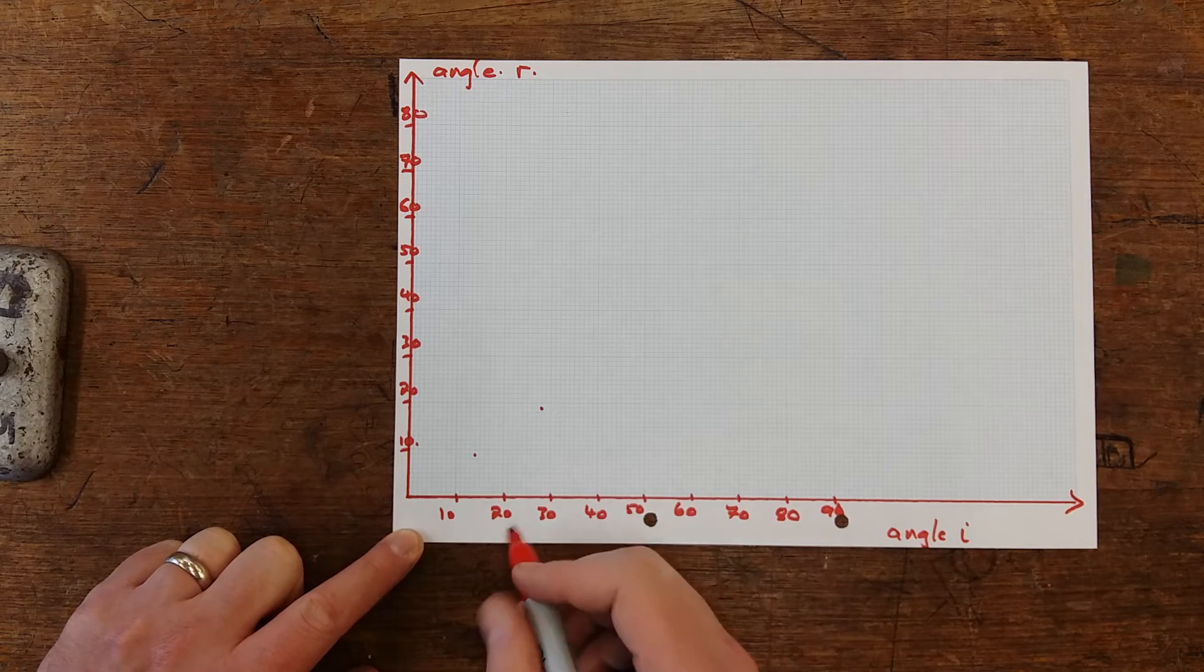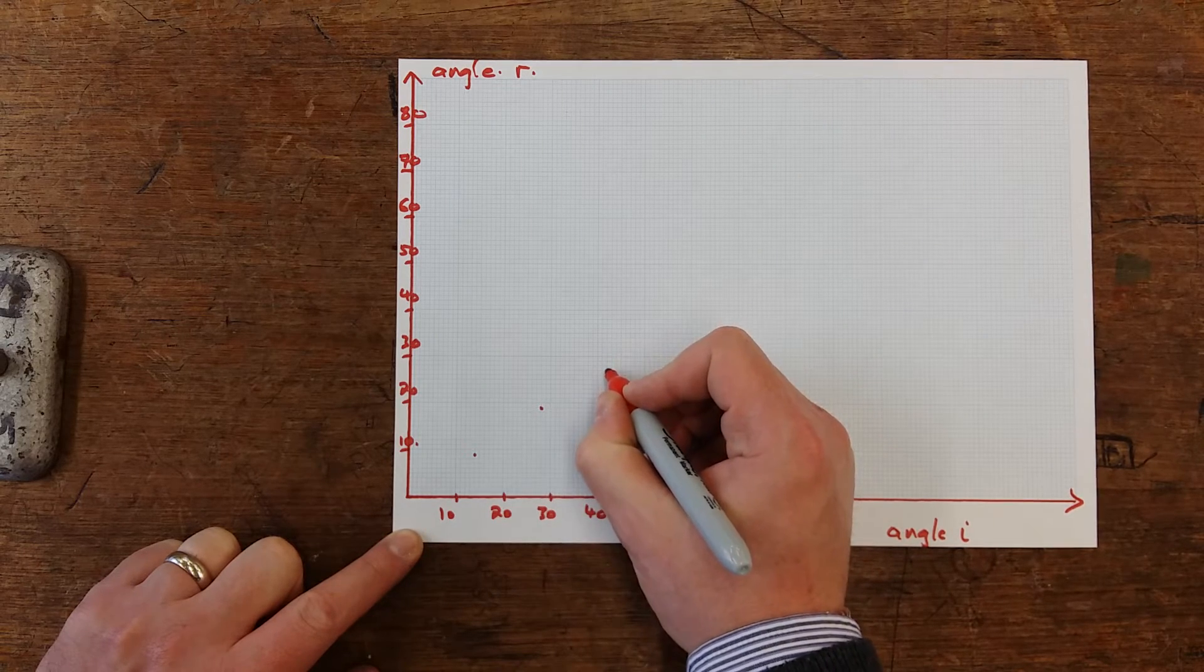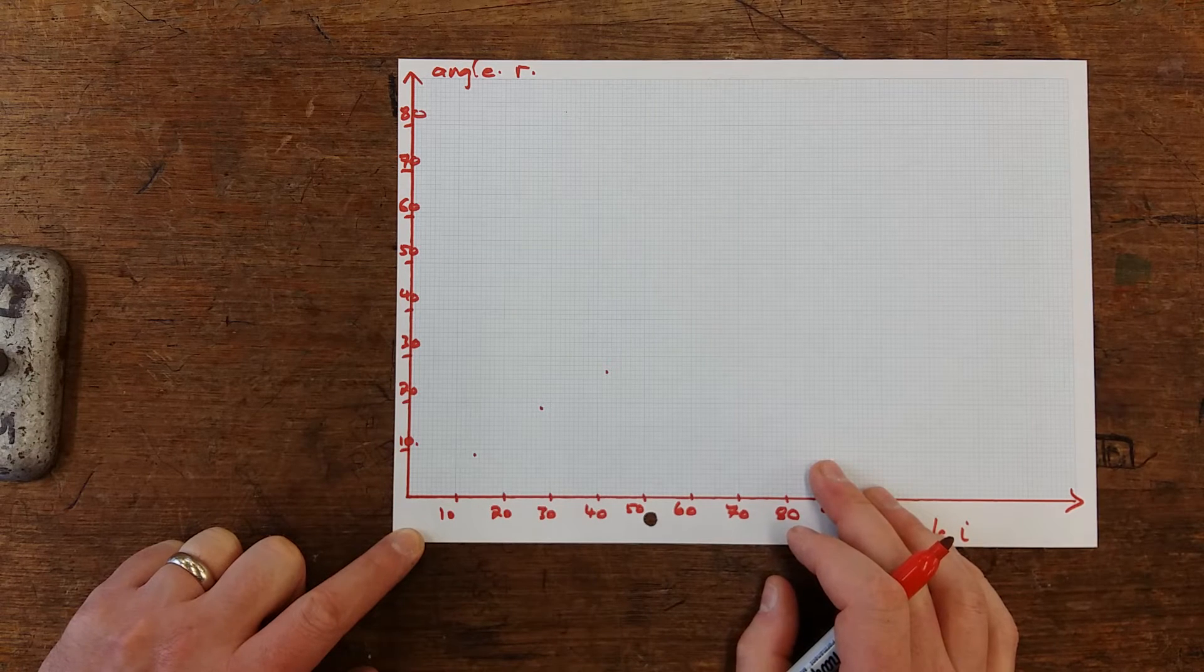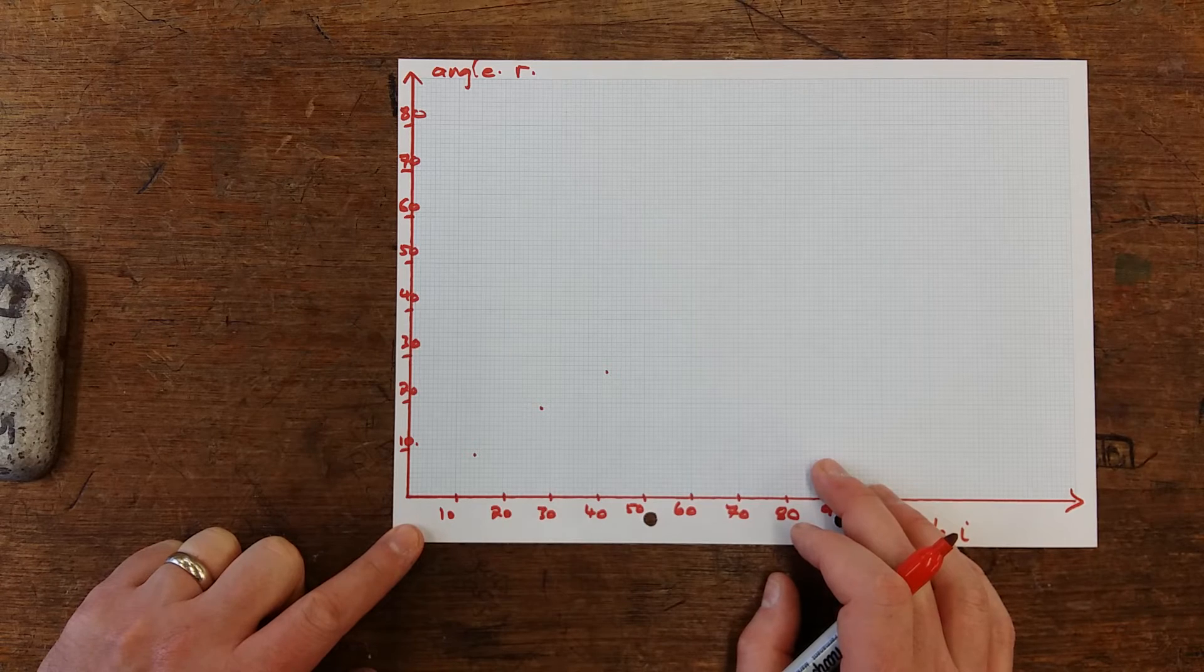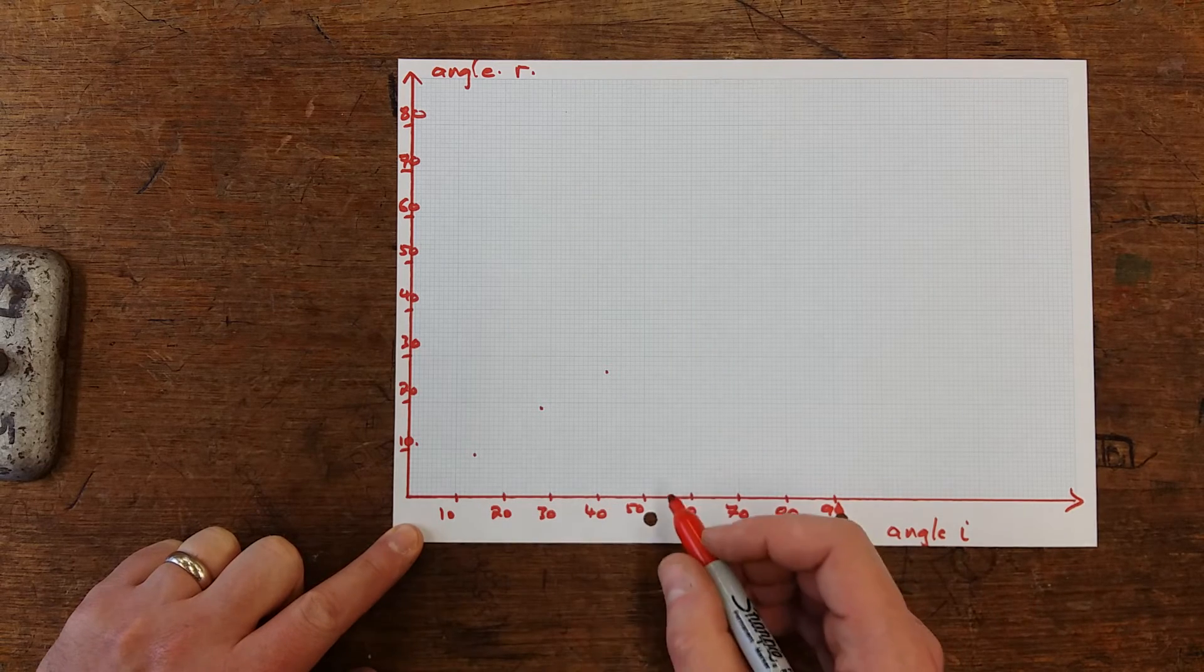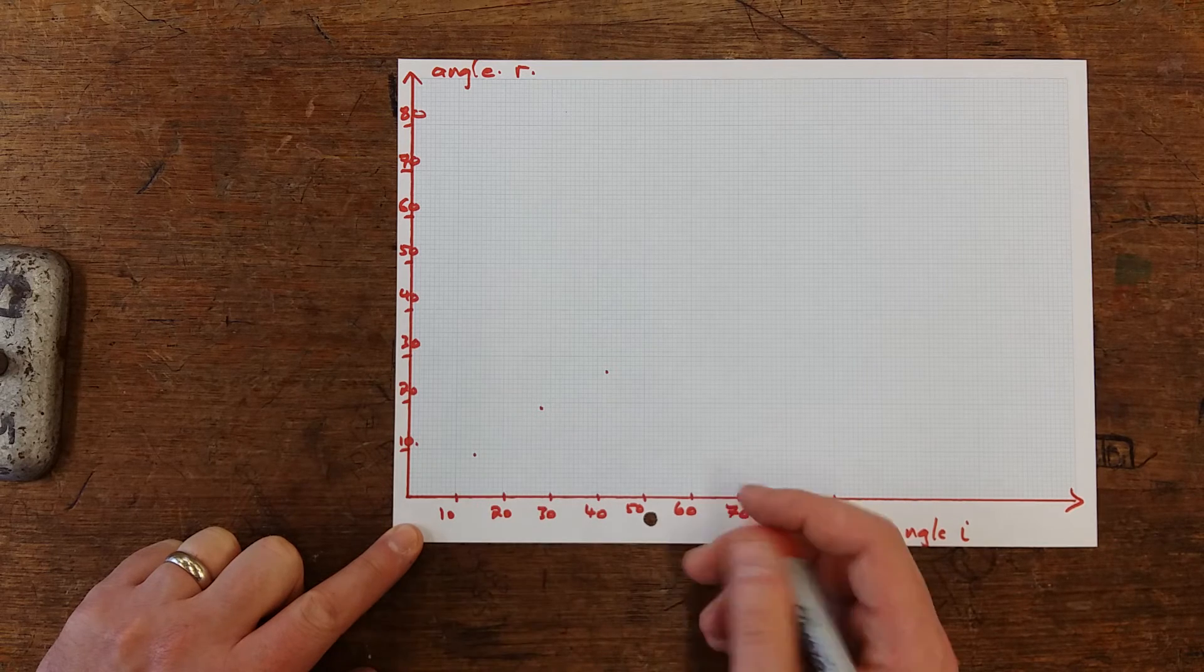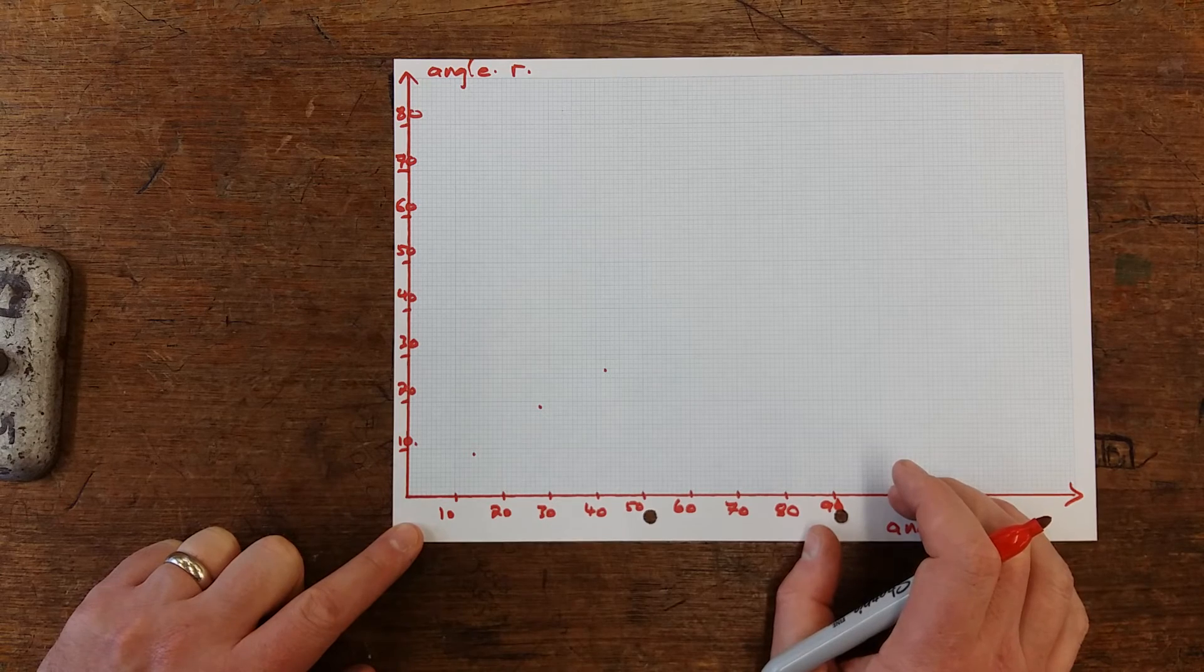So I'm just going to fill these in as I stand here and hopefully we'll find a nice pattern. Now remember when you're doing your graphs in physics, should be a straight line graph or a curve. We don't do join the dots. You might use that in biology, you might use it in business studies or other situations, but we don't do that in physics.